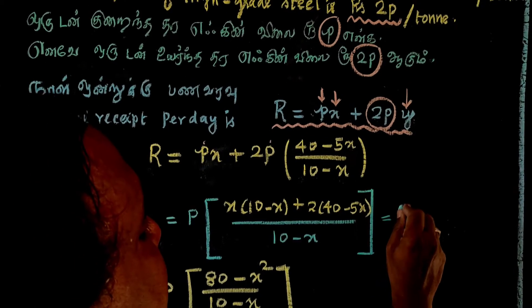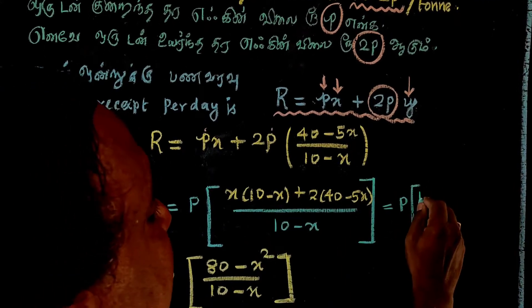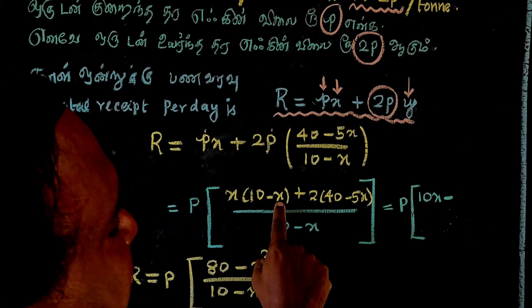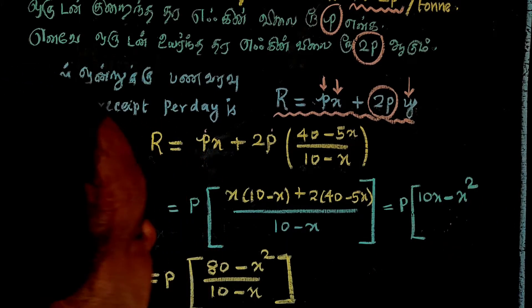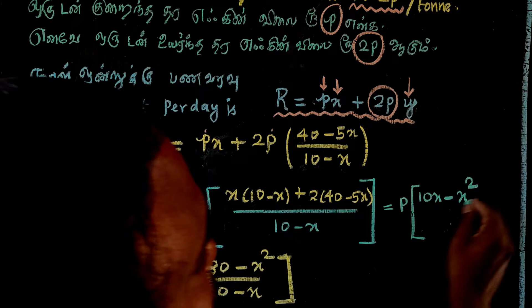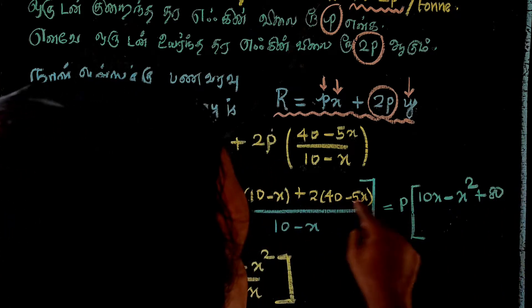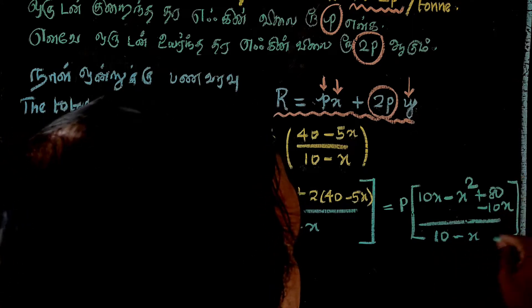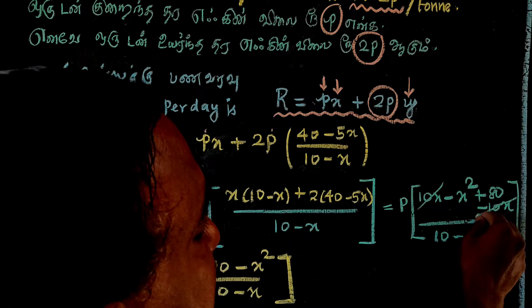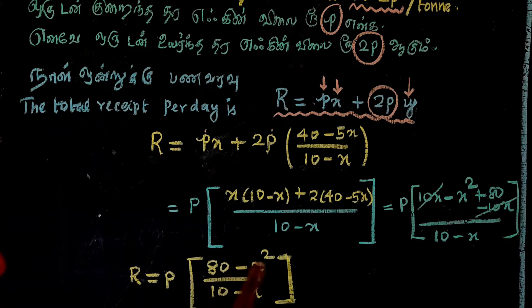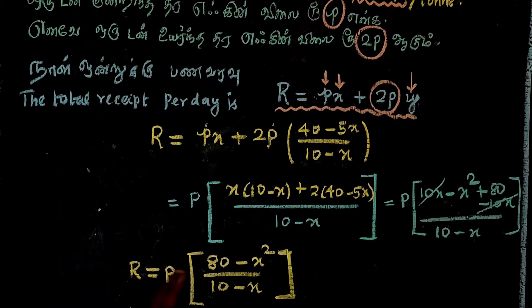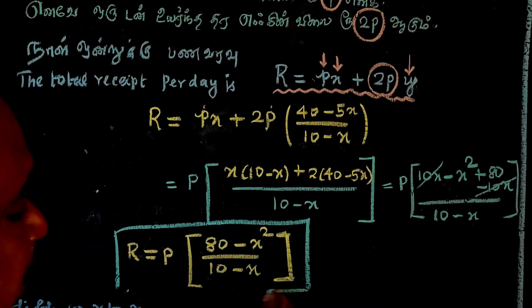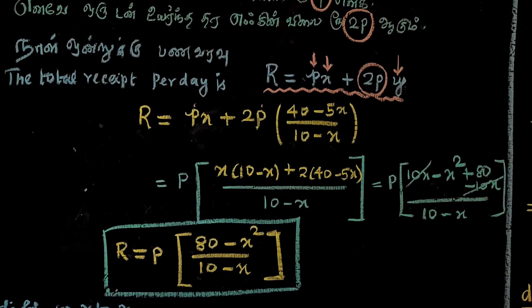Expanding: p times (10x minus x² plus 80 minus 10x) divided by (10 minus x). The 10x terms cancel, giving R is equal to p times (80 minus x²) divided by (10 minus x).